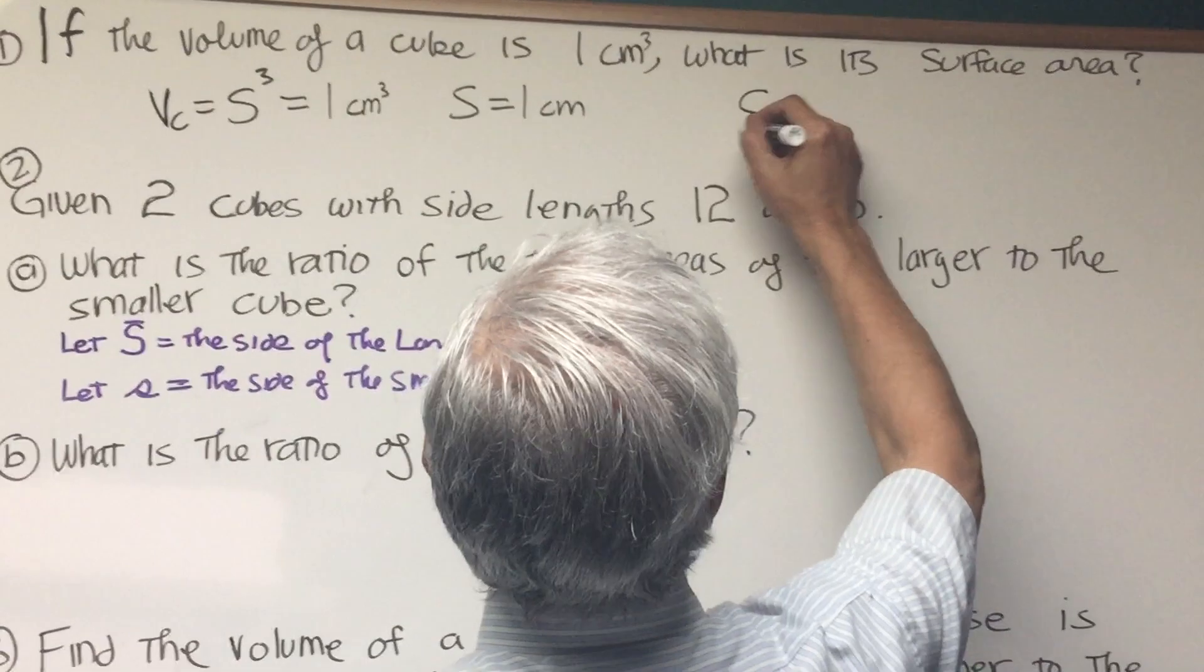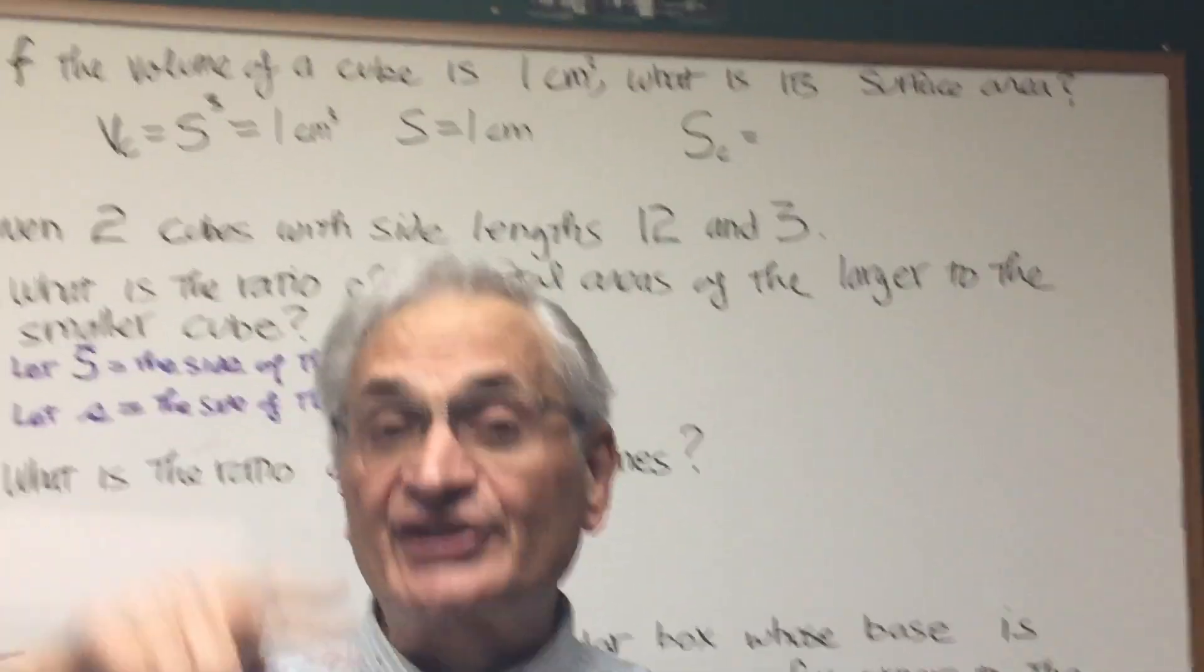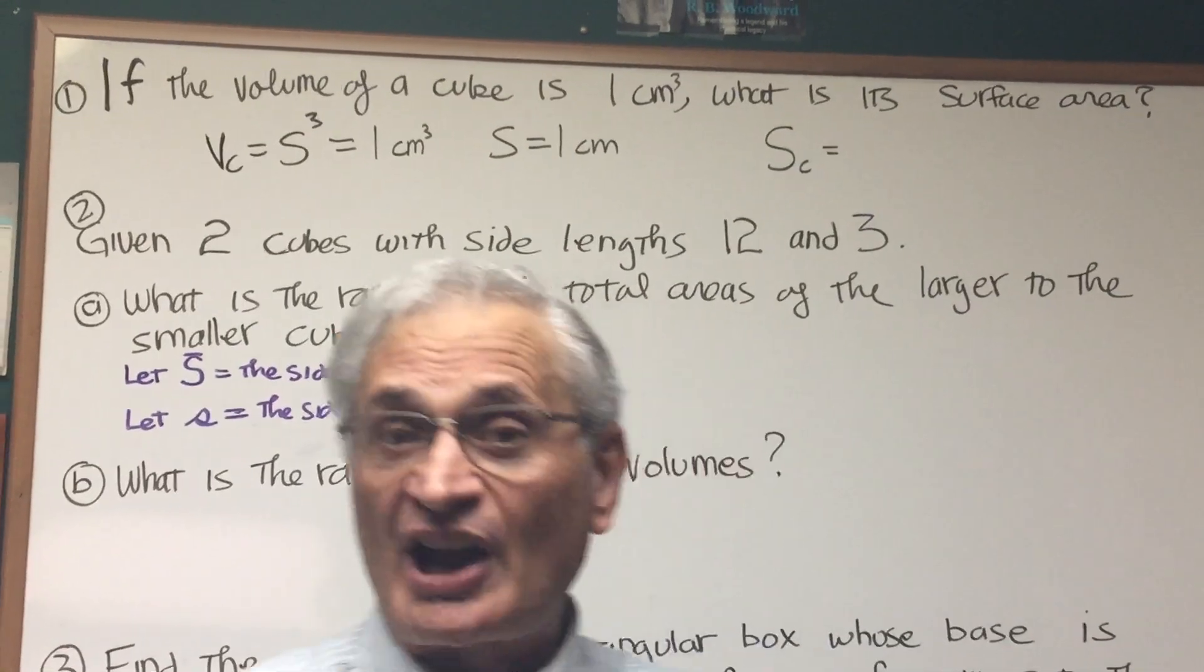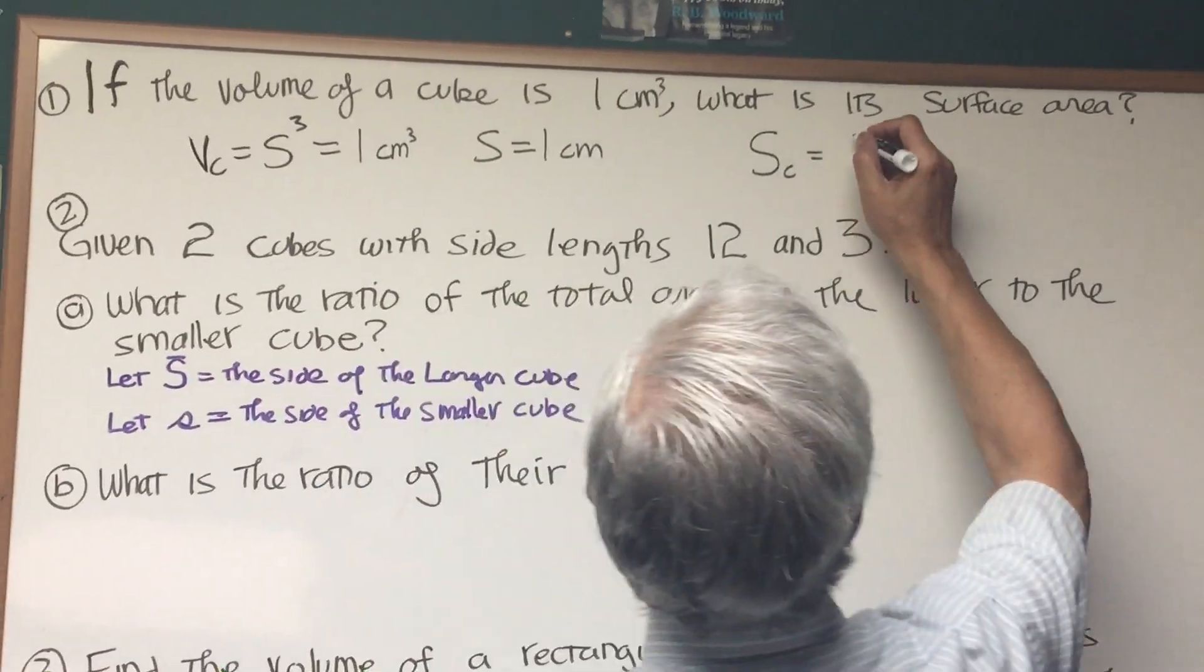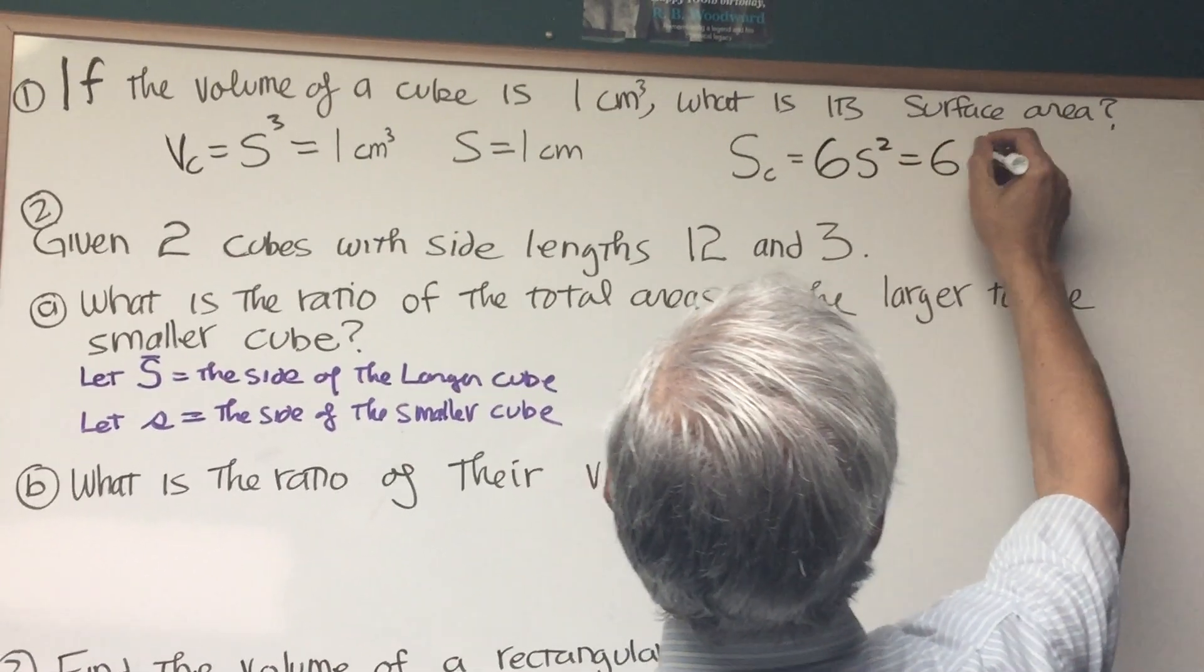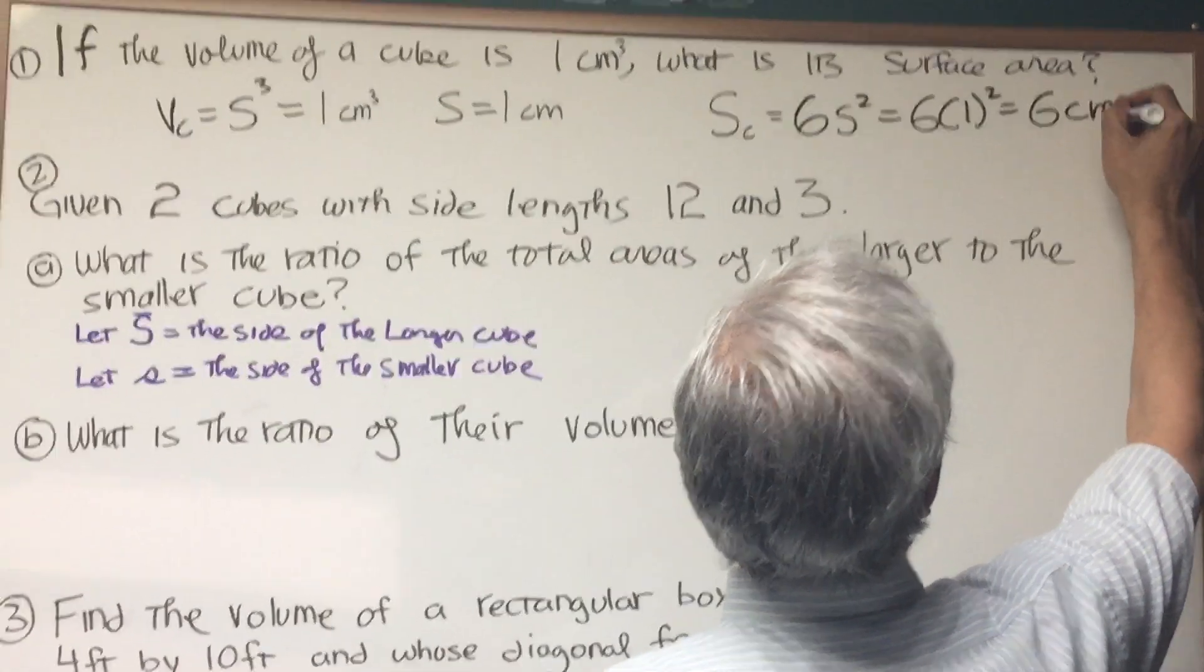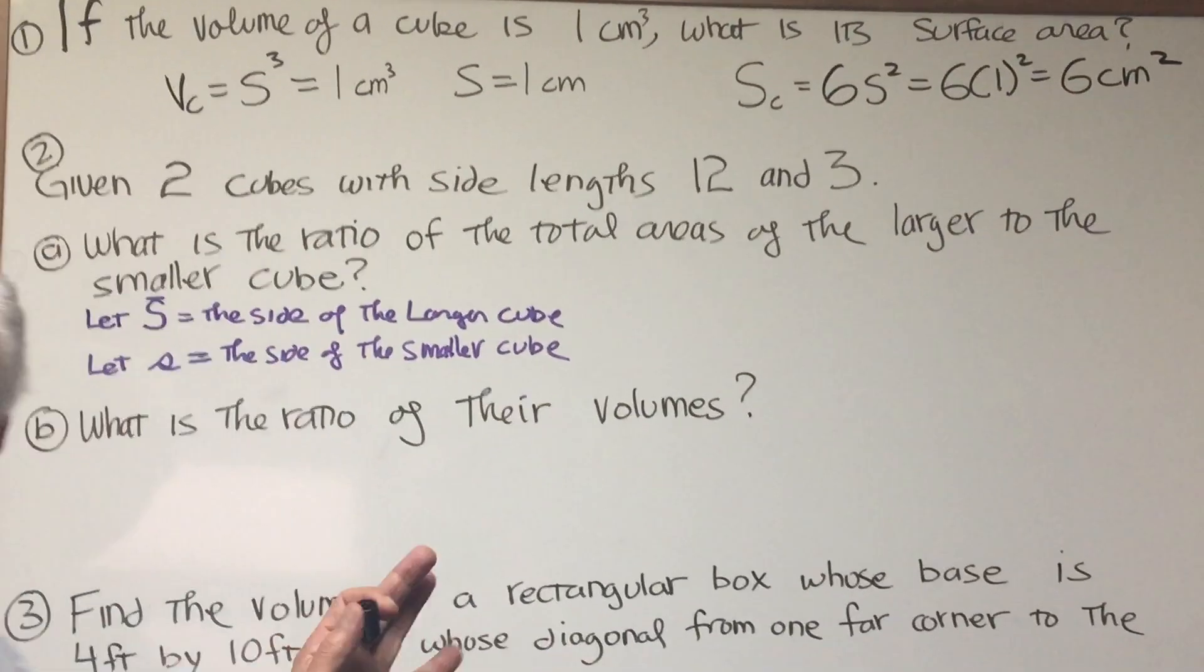Well, the surface area of a cube, we have how many sides are there to a cube? We have six sides. If you know from a pair of dice or a single die, there are six sides. Each side is s squared, so the answer to this is 6 times 1 squared or 6 centimeters squared. All right, start off with an easy one.